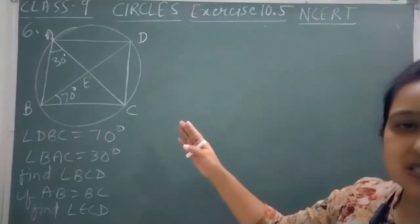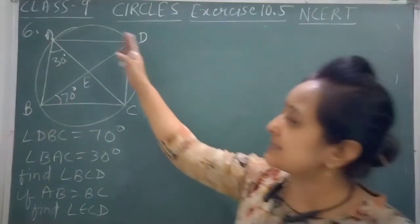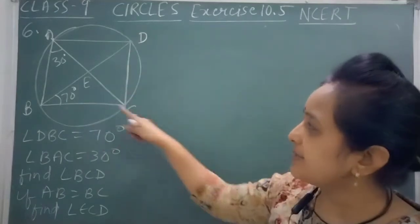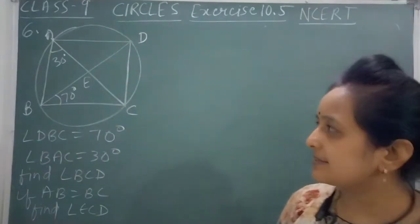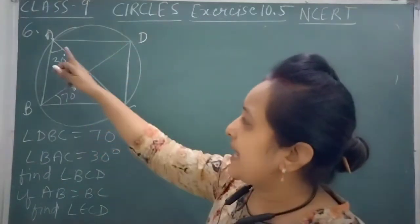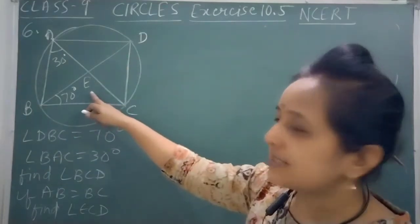In question number 6, we have a circle where ABCD is a cyclic quadrilateral and the diagonals AC and BD meet at point E.